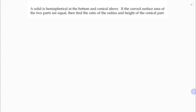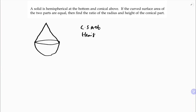A solid is hemispherical at the bottom and conical above. If the curved surface area of the two parts are equal, then the curved surface area of the hemisphere equals the curved surface area of the cone. The curved surface area of the hemisphere is 2πr² and the curved surface area of a cone is πrl.